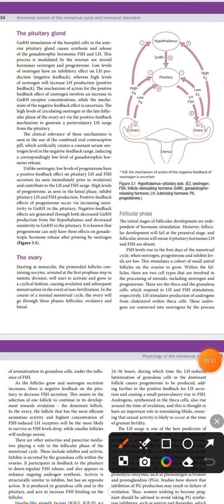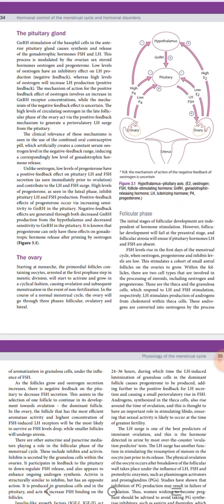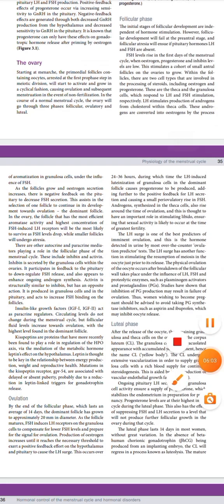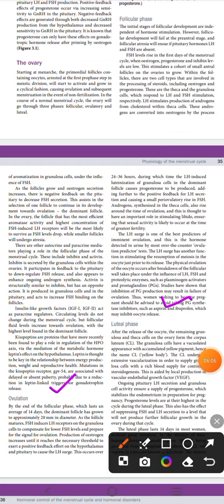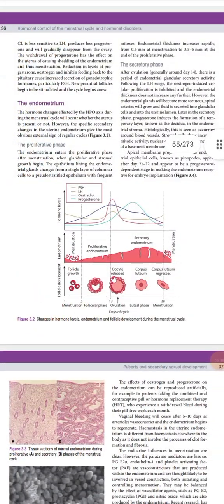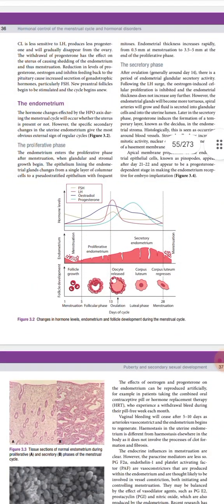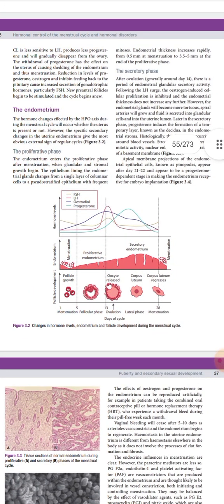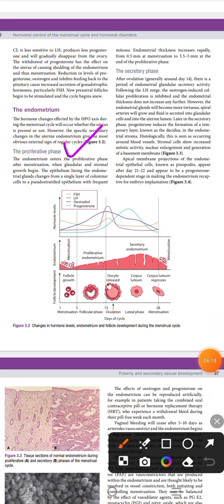Now we will discuss the ovarian cycle and the ovarian changes that occur in the normal menstrual cycle. There are three phases: number one is the follicular phase, then comes ovulation, and number three is the luteal phase. After that we will discuss endometrial changes — the uterine cycle — which are the changes occurring mainly in the uterus. It constitutes two phases: the proliferative phase and the secretory phase.